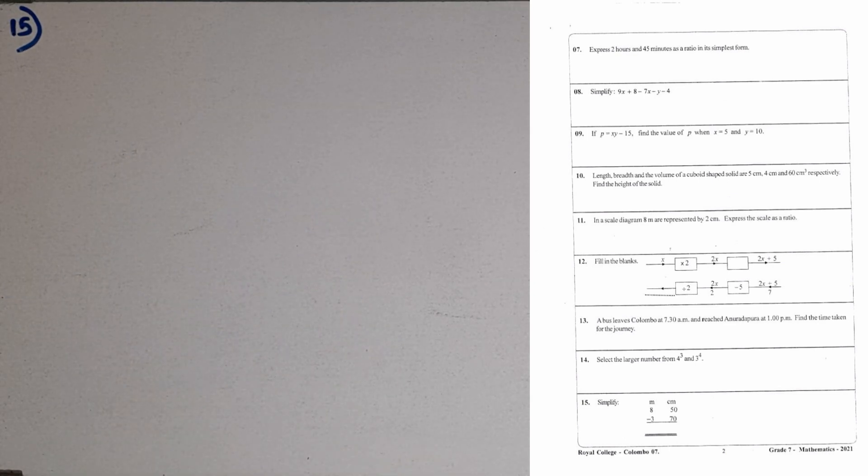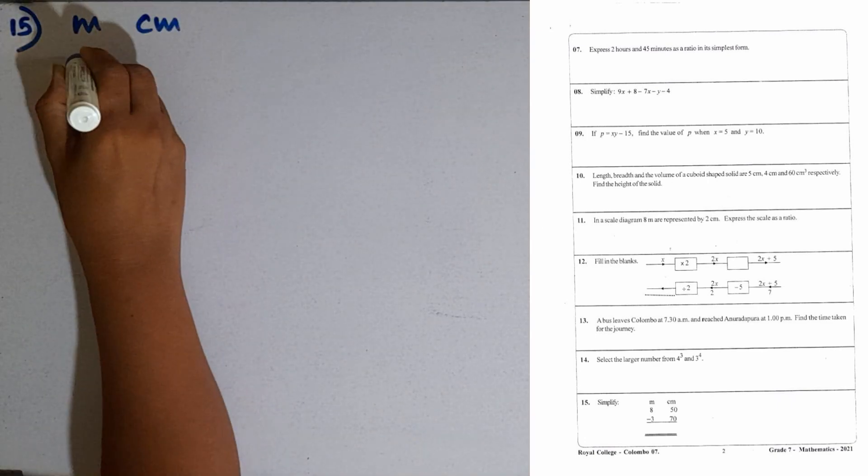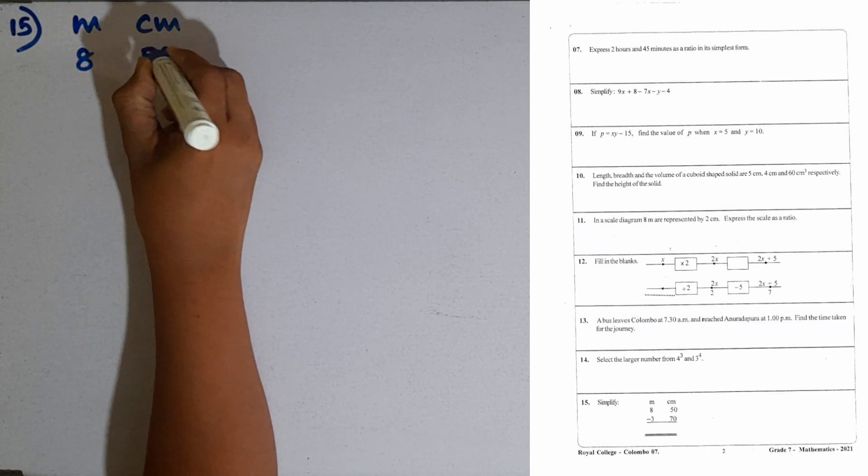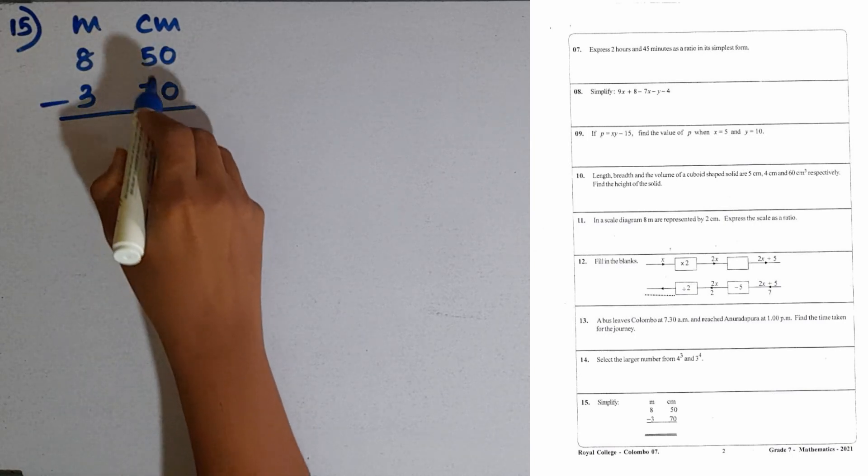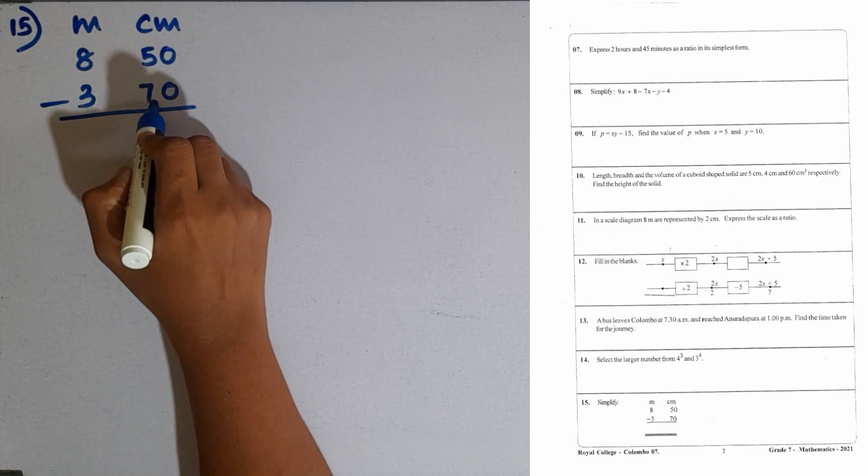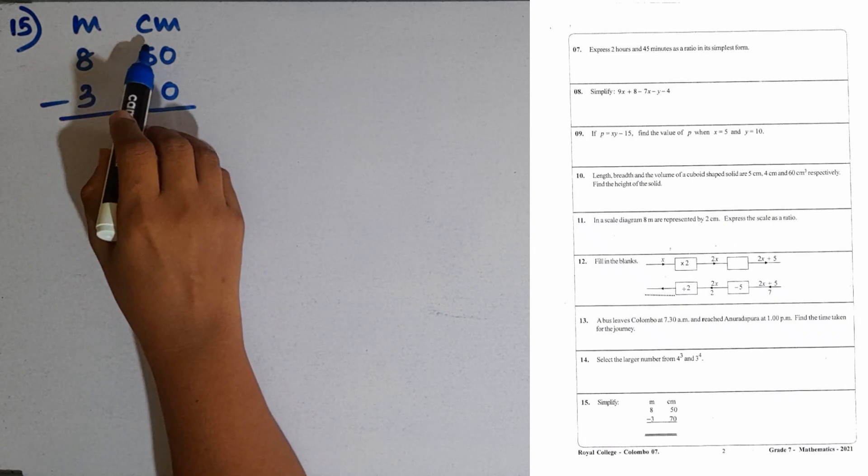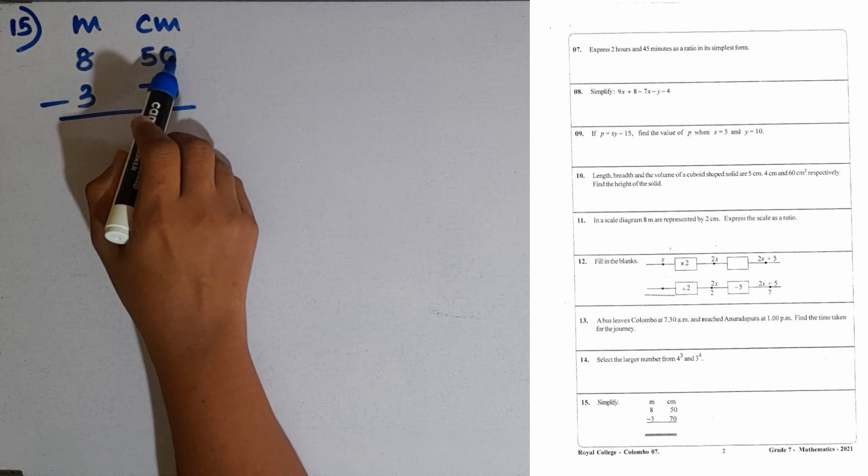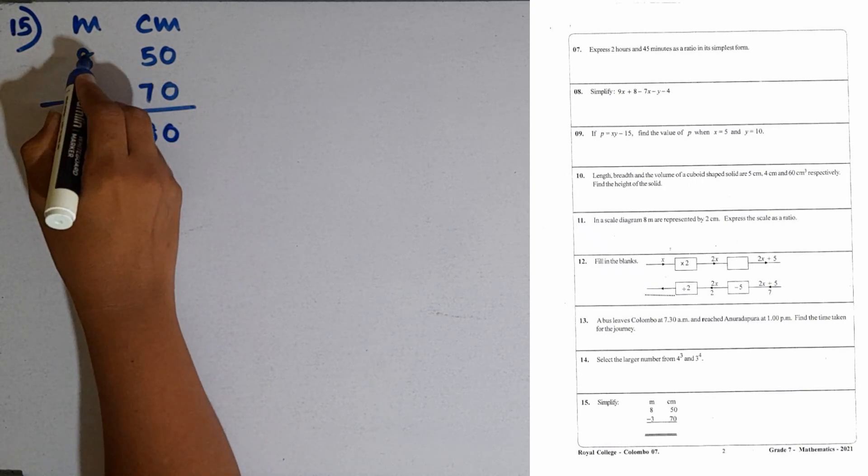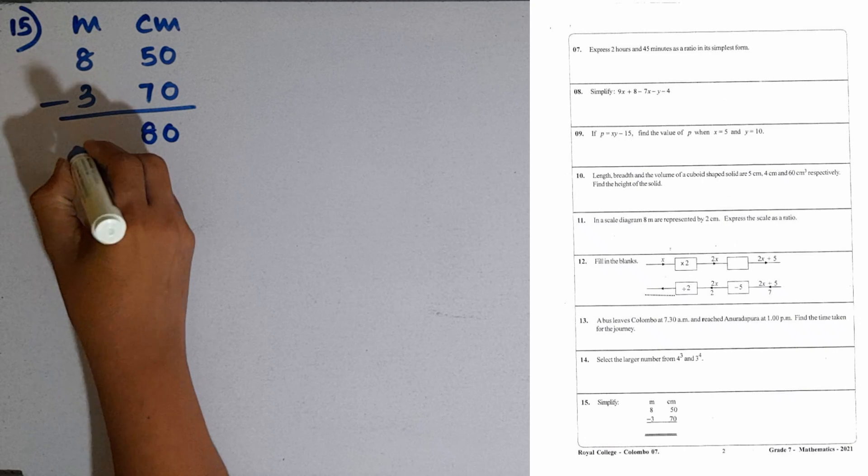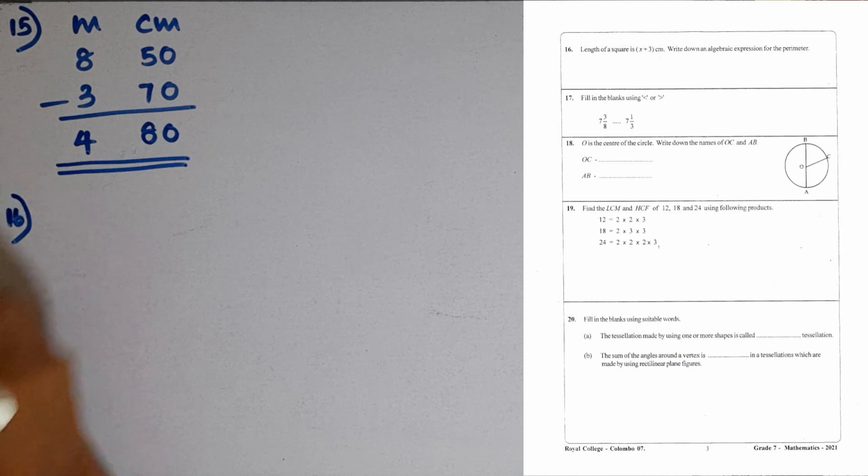Question number 15. We are given to simplify this one, meters and centimeters. Then, 8 meters 50 centimeters subtract 3 meters 70 centimeters. Subtraction. We can't subtract 70 from 50, so that we have to take 1 meter from meters side, it becomes 100. 100 plus 50 is 150. 150 minus 70 is 80. Now, the remaining is 7 here. 7 minus 3 is 4. 4 meters 80 centimeters is the answer.